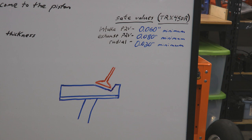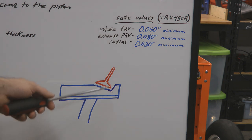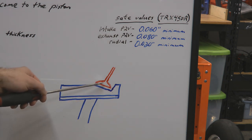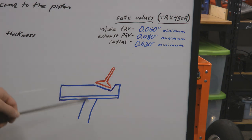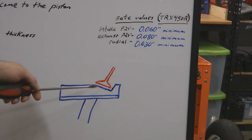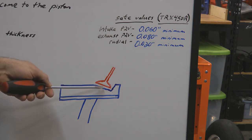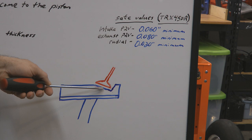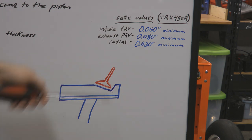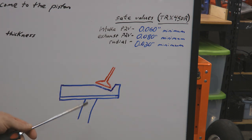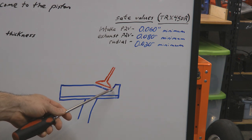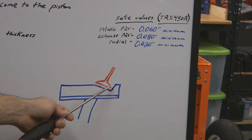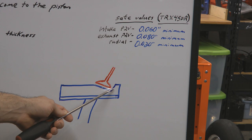I've got an illustration up here on the whiteboard. This blue block is our piston and this red thing is our valve, to illustrate what we're going to measure. Whenever I talk about piston to valve clearance, it's going to be from the top of the valve pocket of the piston to the bottom of the valve. And when I talk about radial clearance, it's going to be from the tip of the outside of the valve to the edge of the piston's valve pocket.